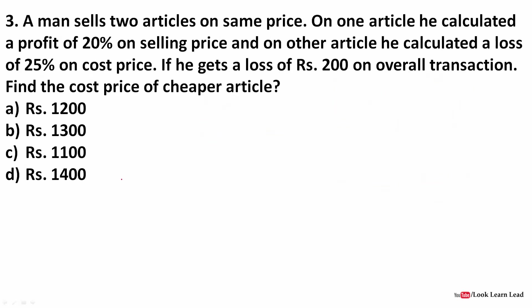Next question: a man sells two articles at the same price. On one article he calculates a profit of 20% on the selling price, and on the other article he calculates a loss of 25% on the cost price. This difference — profit on selling price versus loss on cost price — is what makes this question unique.